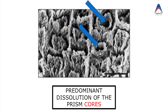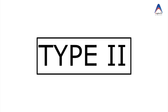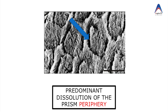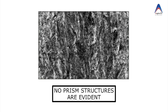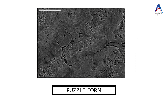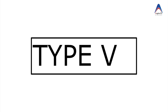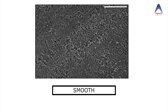In Type 1 pattern, the acid acts more on the cores of the enamel prisms rather than the periphery. In Type 2, it is the margin that is demineralized rather than the core of the enamel prism. In Type 3, you see a mixture of both Type 1 and Type 2 patterns. Type 4 shows a pitted surface that looks like an unfinished puzzle or map or network. In Type 5, we see a flat smooth surface of the enamel prisms.